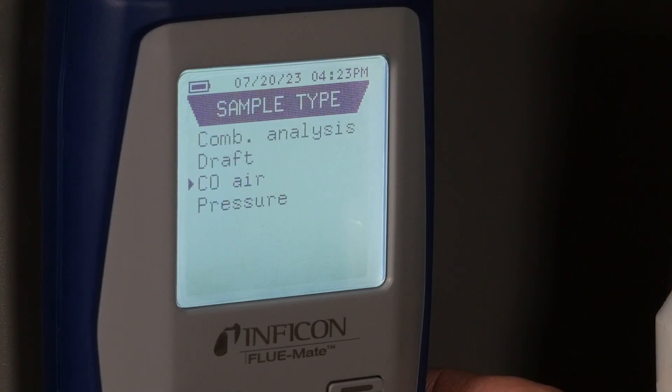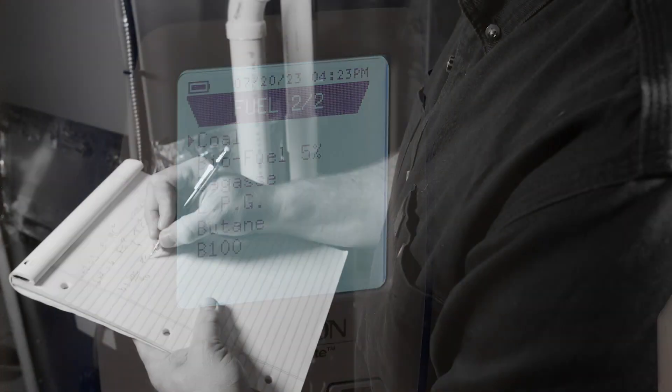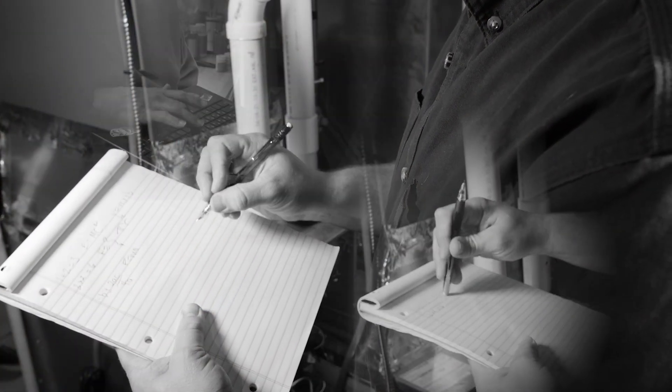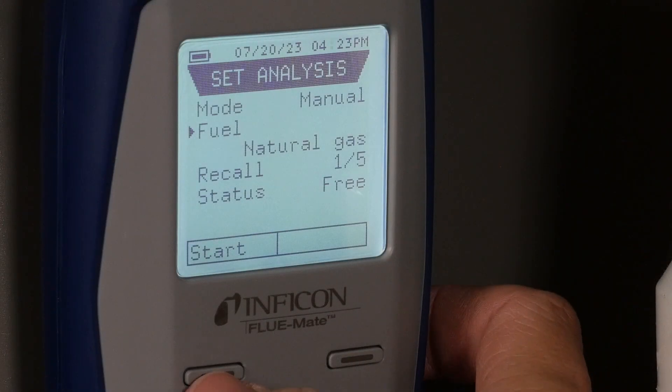Flumate has 15 programmable fuels with 13 of the most commonly used preloaded. This flexibility and convenience eliminates the need for manual calculations and tedious data entry, allowing you to focus on what matters most, getting accurate results quickly.